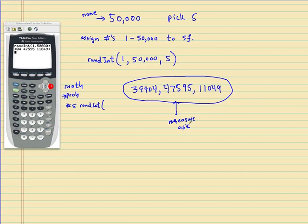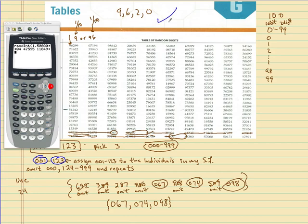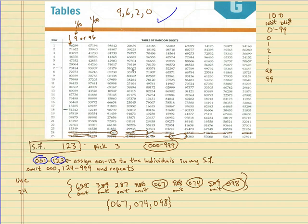I just wanted to give you some more practice on how to pick samples, especially using the tables. These tend to give students problems. Make sure you can explain the process: take your sampling frame, assign numbers, omit the appropriate ones, omit repeats, and select. Thanks for watching and have a nice day.